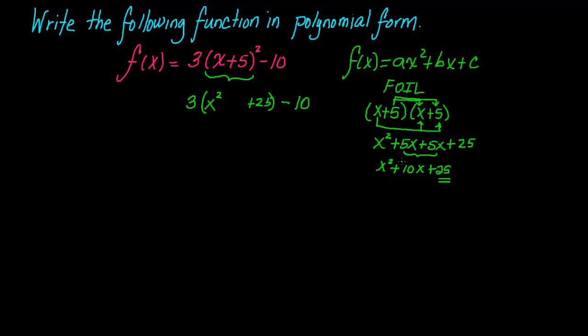And notice that the middle term is 10x. So where does that come from? We can see that pattern, and we can say that the middle term will be this term times 5, which is 5x, times 2. So 10x. And that will always work.